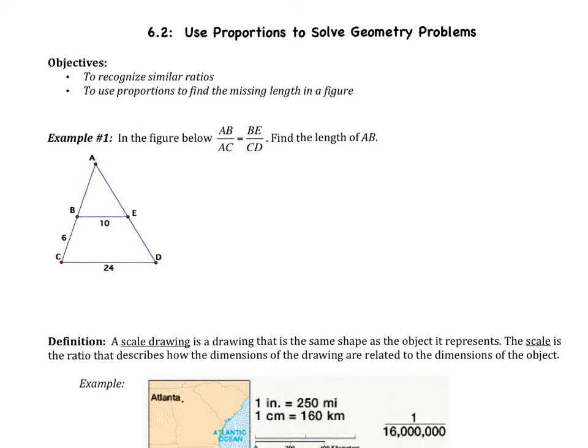Similar to what we did yesterday, we're kind of just going to add on to it today. First thing, example one. In the figure below, AB over AC equals BE over CD. Notice this is a proportion because I have two ratios set equal to each other. AB is a ratio to AC, and BE with CD is a ratio.